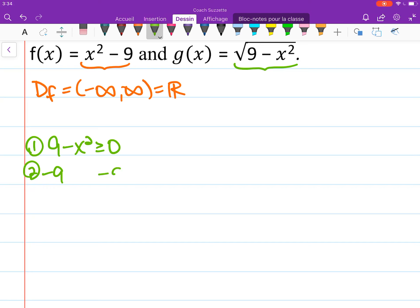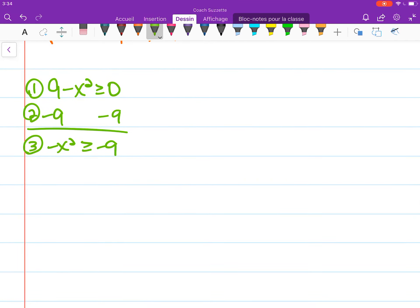Subtracting 9 from both sides, -x² ≥ -9. If we divide both sides by negative 1, that means x² ≤ 9.